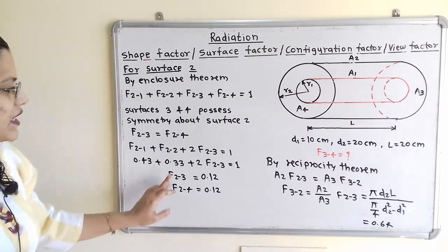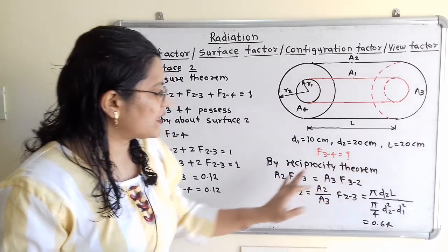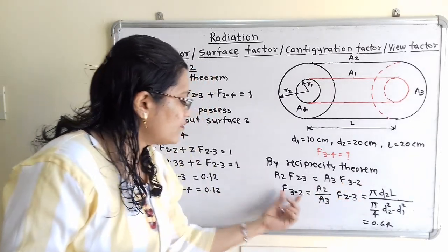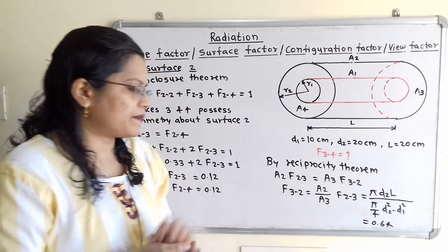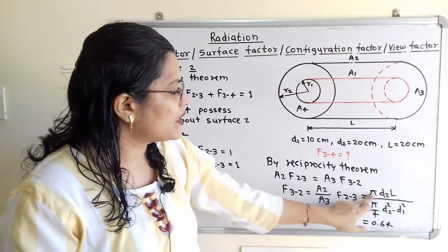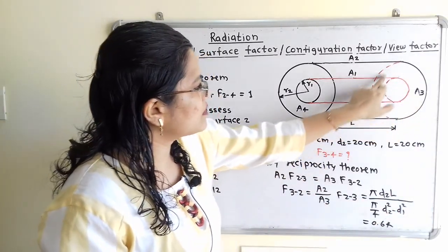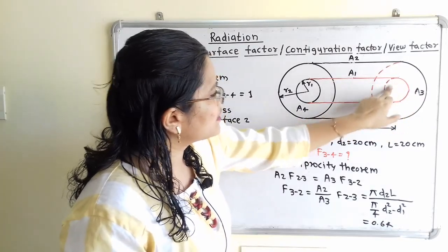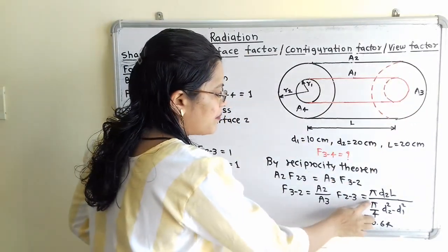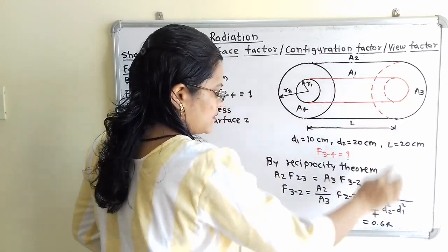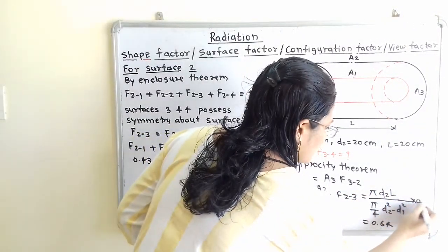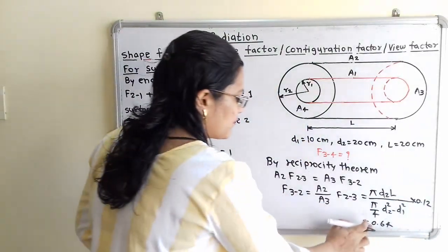We apply the reciprocity theorem for F(3→2): A2 · F(2→3) = A3 · F(3→2), so F(3→2) = (A2/A3) · F(2→3). Here A2 = π·D2·L and A3 = (π/4)·(D2² − D1²), which is the solid annular cross-sectional area. Substituting and multiplying by F(2→3) = 0.12, we get F(3→2) = 0.64.